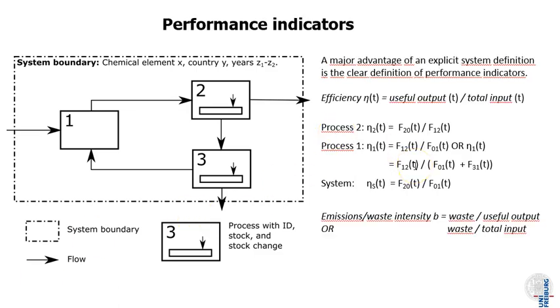The performance indicators like the efficiency measures that we define from our system are now also time dependent, so they can change over time. The efficiency over time is the flow one over time divided by the other flow over time, and it can be more efficient in one year and less efficient in another year.